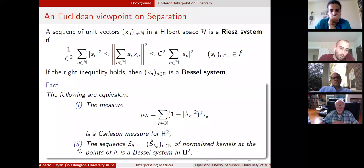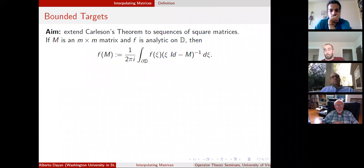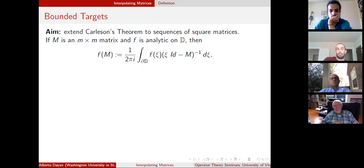The question that started my PhD was: can we extend Carleson's interpolation theorem to sequences of square matrices? Here, by sequences of square matrices, I mean any sequence of square matrices where the sizes can be anything — the first one can be 2 by 2, the second one can be 7 by 7, the third one can be a scalar 1 by 1, and so on. There is no condition on the dimension of the matrices. The way we apply a holomorphic function to a matrix is by extending the Cauchy integral formula using the functional calculus. Since we're going to use holomorphic functions in the unit disk, we're going to ask that all the spectra of our matrices belong to the unit disk.